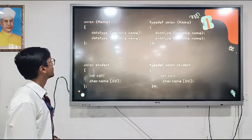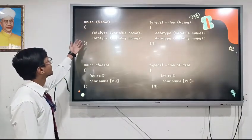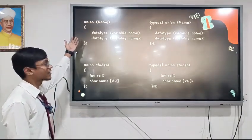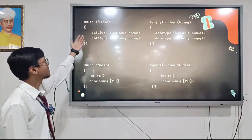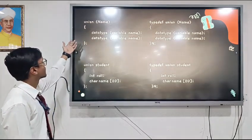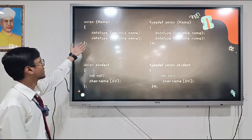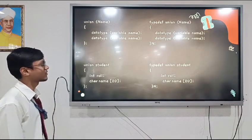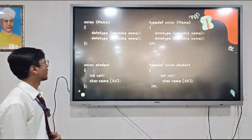Here is the syntax of union. First of all, we have to write the keyword union. After that, we have to give the name of the data type. And in the curly braces, we can define various types of data types like integer or character.